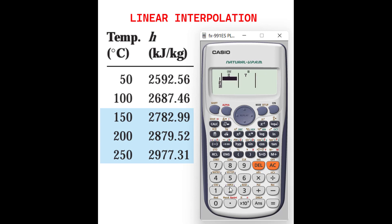And then for x we have to put 50, press equal, and then 100. Since we want to have the value between 50 and 100, for 50 the enthalpy value is 2592.56.